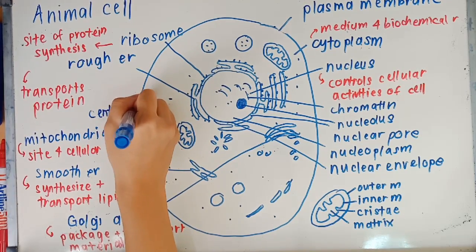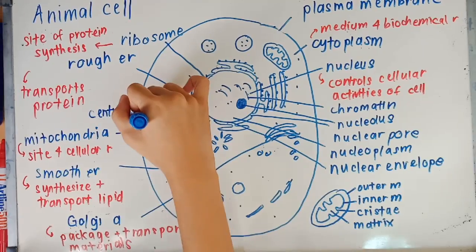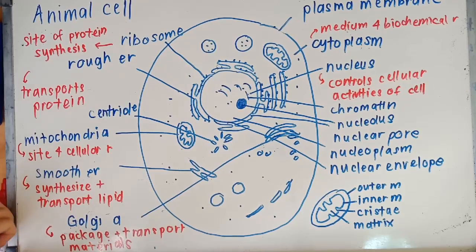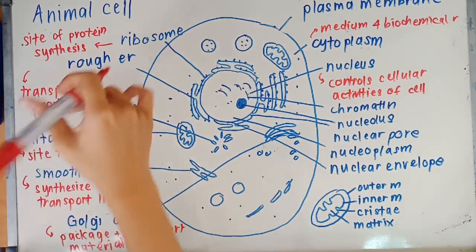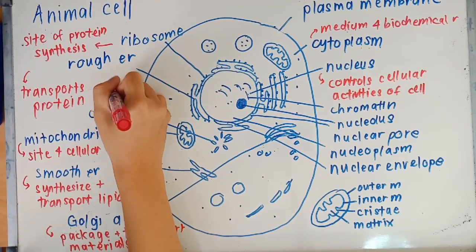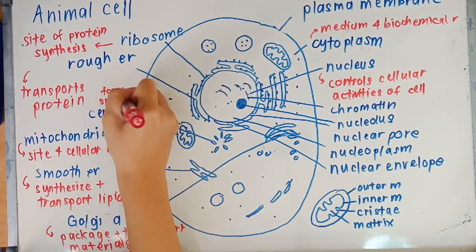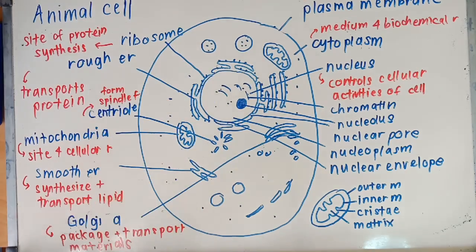Next up we have centrioles. Centrioles is only found in animal cells and it looks like a star shape. The function of centrioles is to form spindle fibers during cell division.